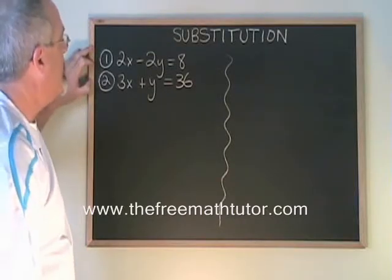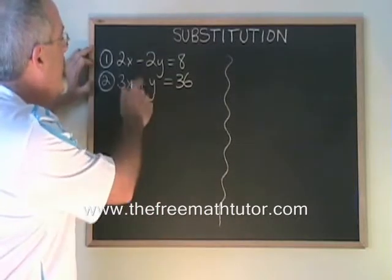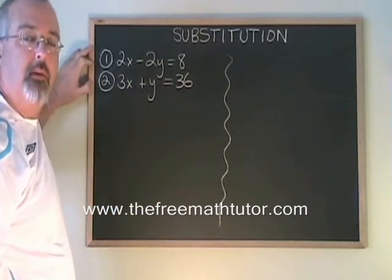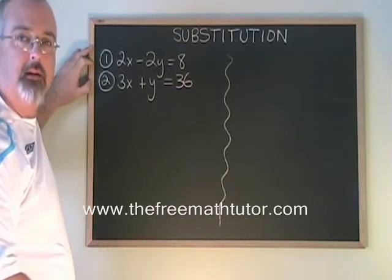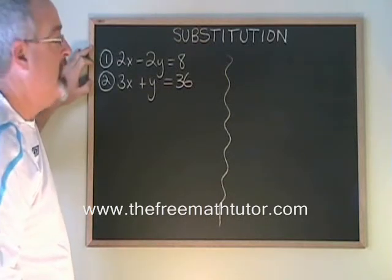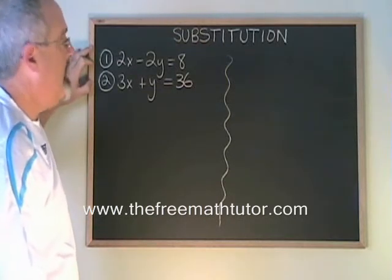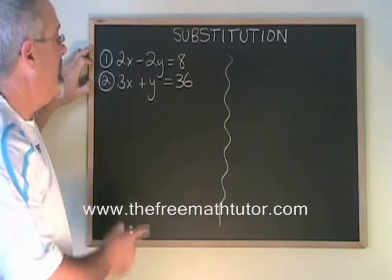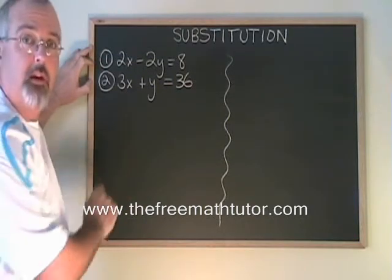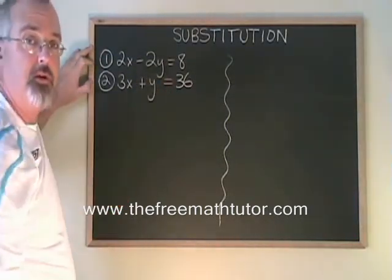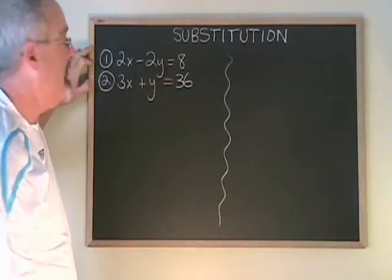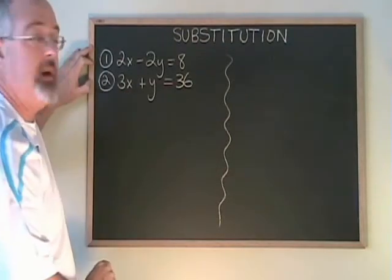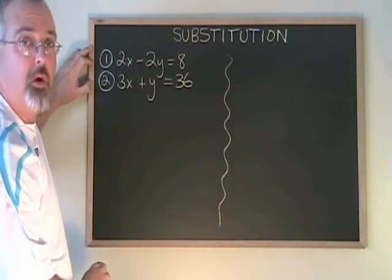In this example, we're given two equations, and neither of them already has one of the letters isolated. So we have to do some algebra to isolate one of the letters in one of the equations before we can do the substitution. I'm going to work with equation two, and I'm going to isolate the y again.